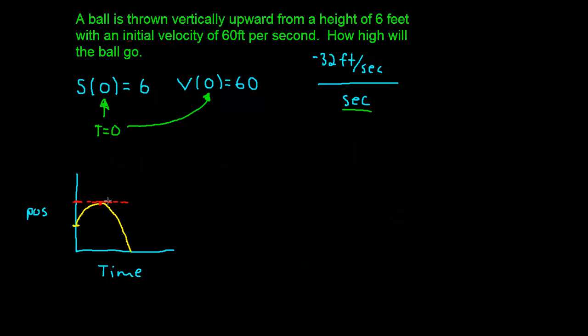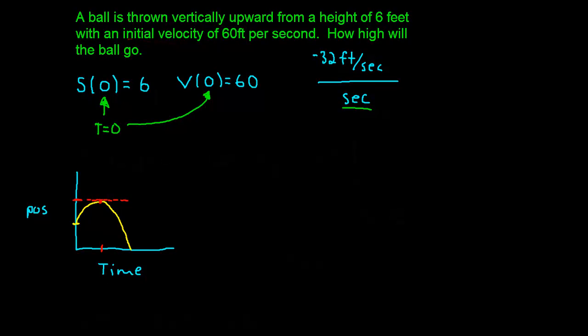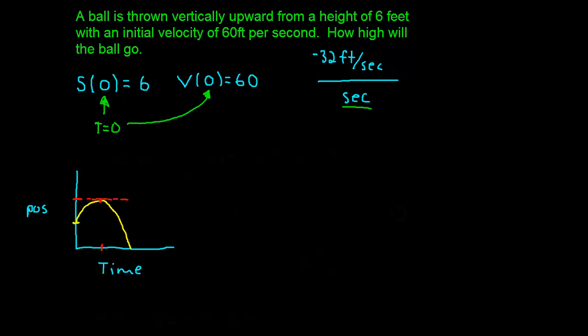And the slope of that tangent line represents my velocity at this particular point in time. So, in other words, I want to know when is my velocity zero? When is my rate of change of my position zero? Okay, so that's just a little outline summary of where we're going with this problem. Let's go ahead and actually solve this now.